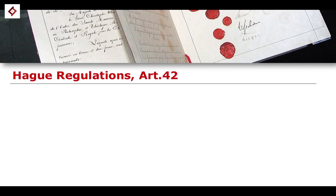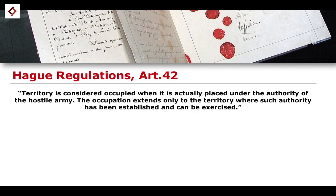Article 42 of the Hague Regulations makes it very clear that territory is considered to be occupied when it is actually placed under the authority of the hostile army. The occupation extends only to the territory where such authority has been established and can be exercised. This is a very important passage because it takes us from not just an invasion or an international armed conflict, but logically to the occupation itself.